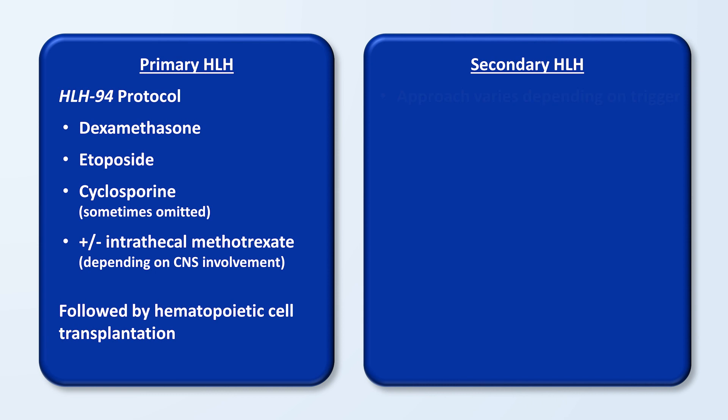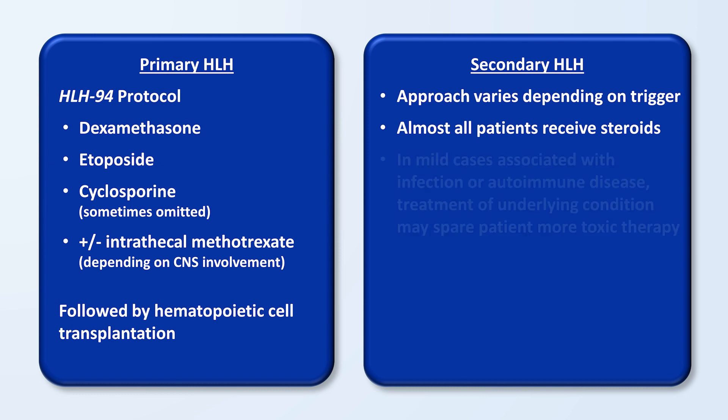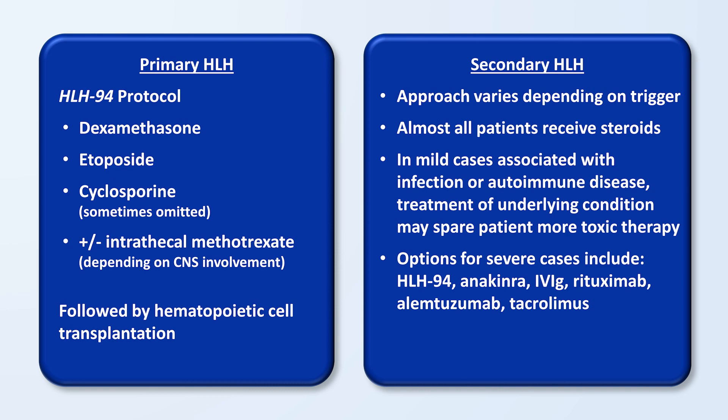For secondary HLH, the approach varies depending on the trigger. Almost all patients should receive steroids. In mild cases associated with infection or autoimmune disease, treatment of the underlying condition may spare the patient from more toxic therapy. However, for severe secondary HLH, depending on the trigger, options might include the HLH-94 protocol and variations on it.